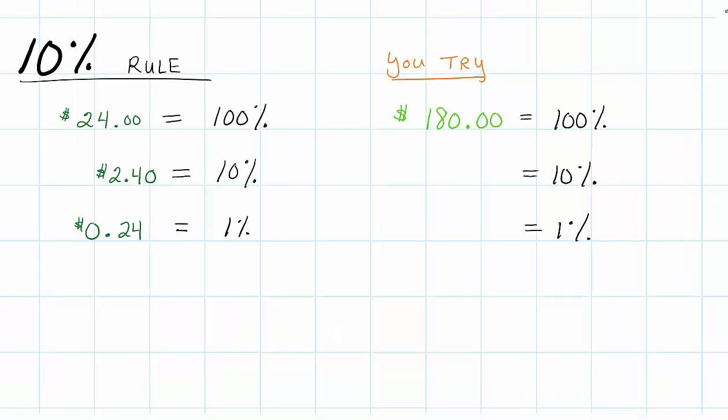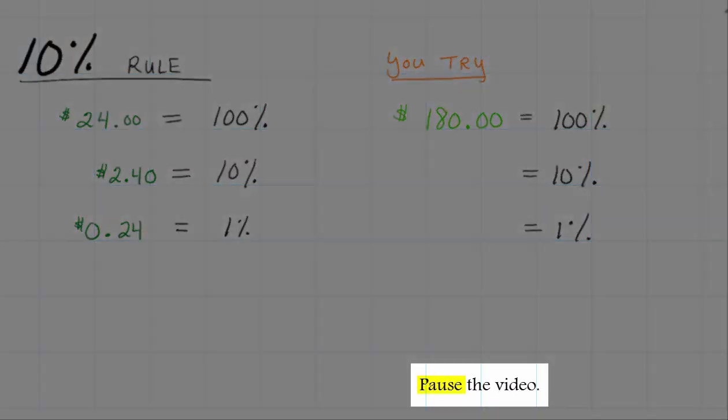Alright, you try. I give you $180. $180 is all of your money. It's 100% of your money. I want you to find 10% and 1%. Pause the video. Give it a shot. And then unpause it. See what I do.